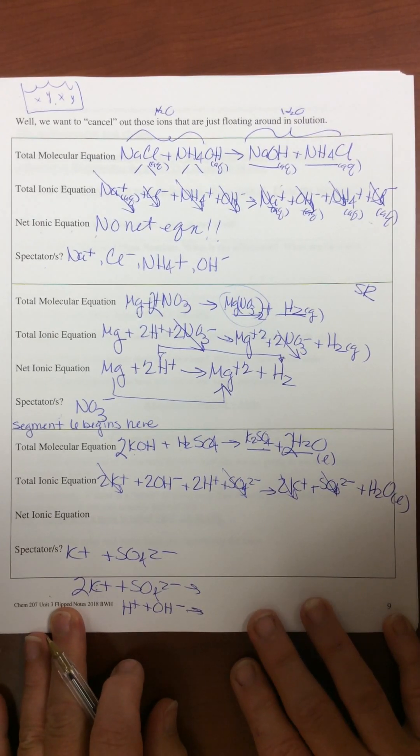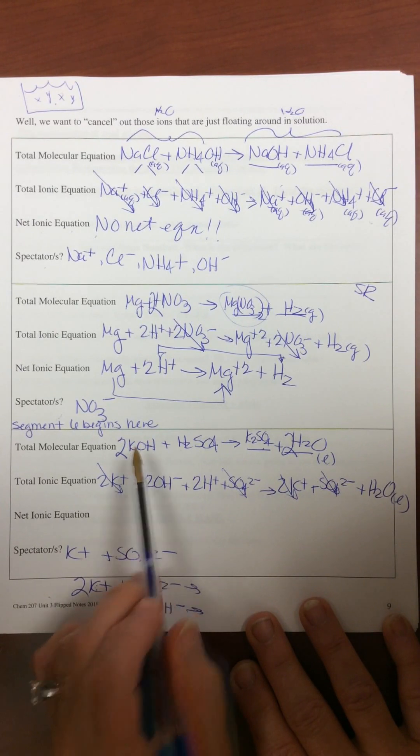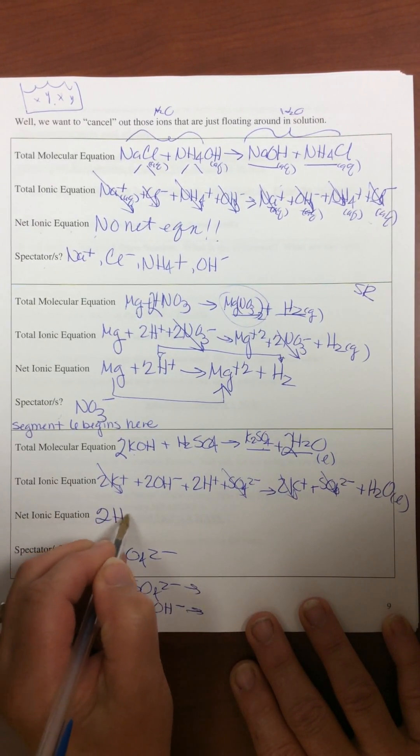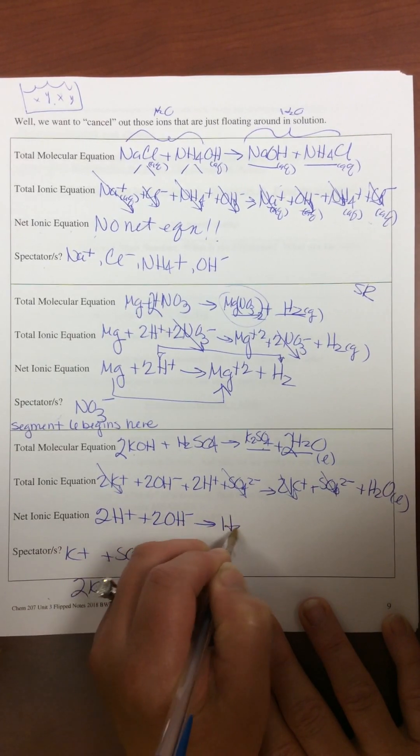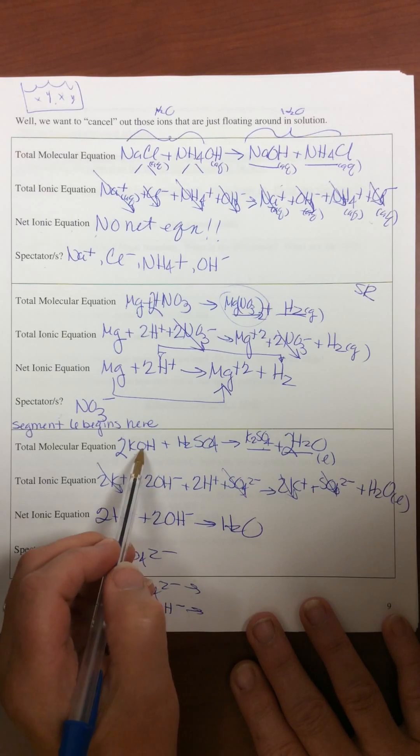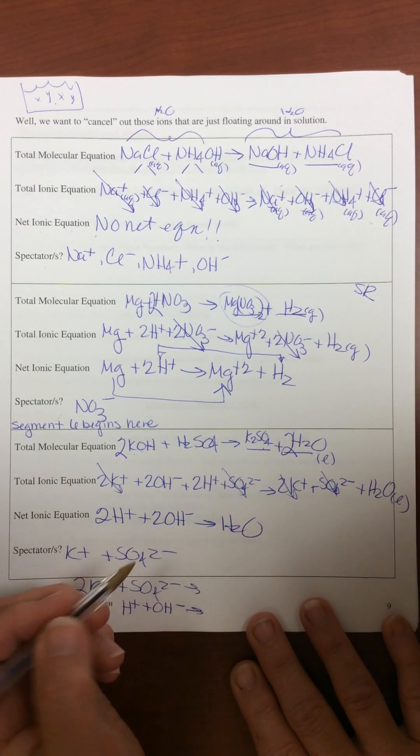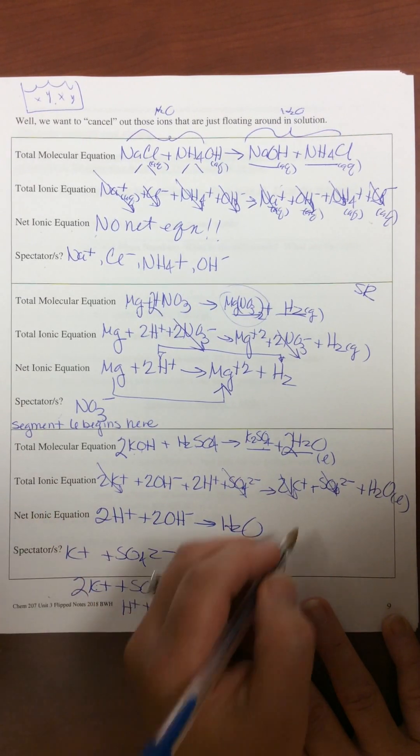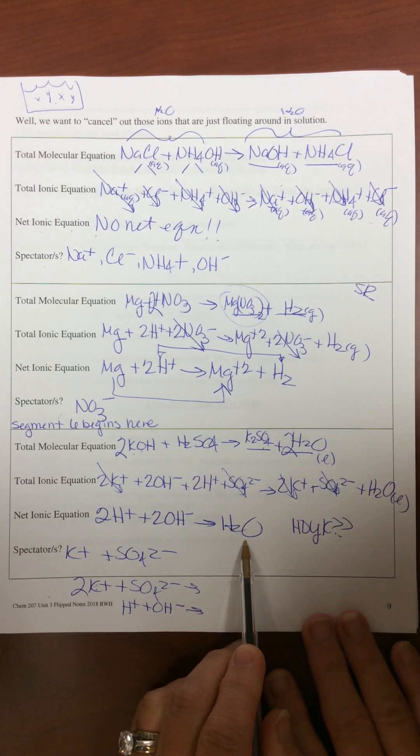And what you see at the end of the day is when you take this acid plus this base, you are really creating 2H plus 2OH minus and you're going to form water. And you would ask yourself, well this is going to look like water. Everything is going to look like water.